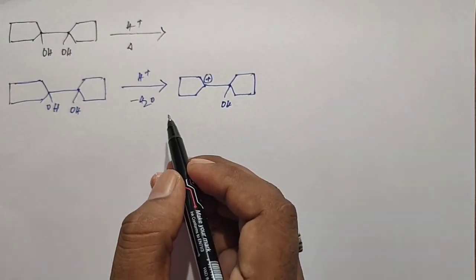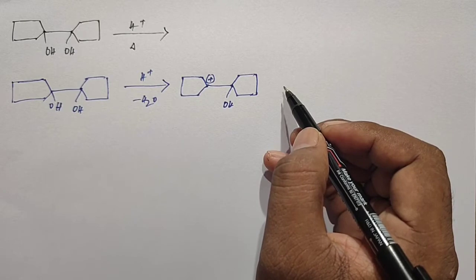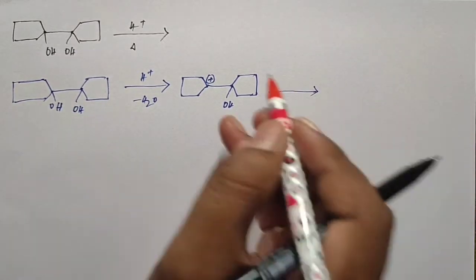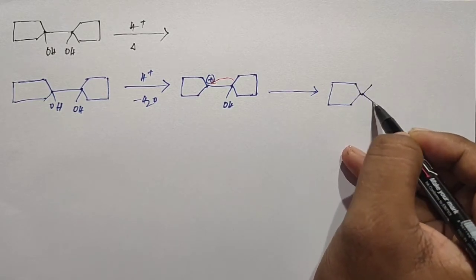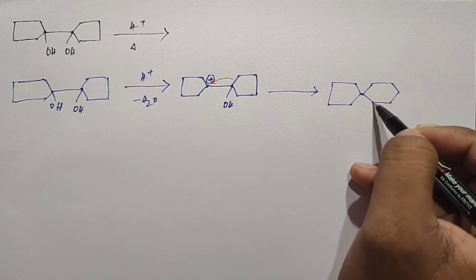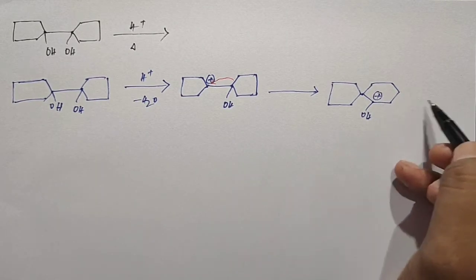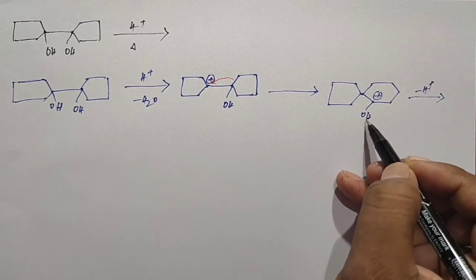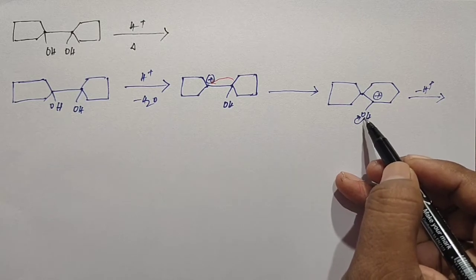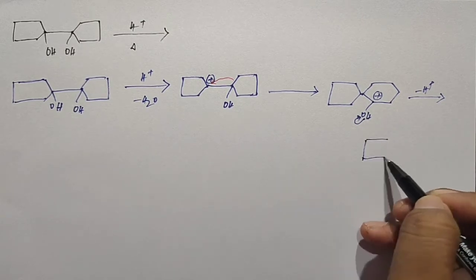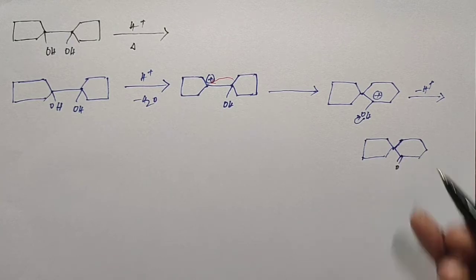After removing the OH group, we get this product. After that, a 1,2-bond shift is possible — this bond shifts toward this carbon and we observe ring expansion. The positive charge shifts to this carbon. Then H⁺ is removed: the sigma electrons from between the oxygen and hydrogen shift toward the oxygen as lone pair electrons, and we get the final product.